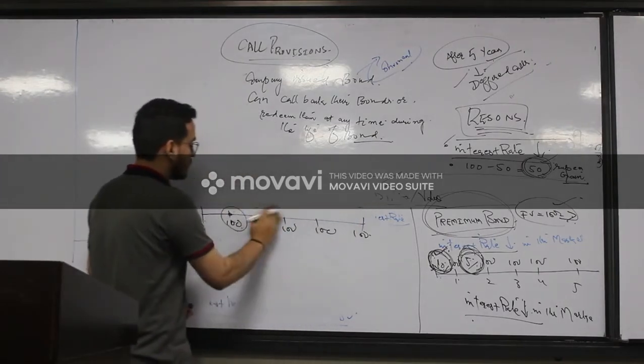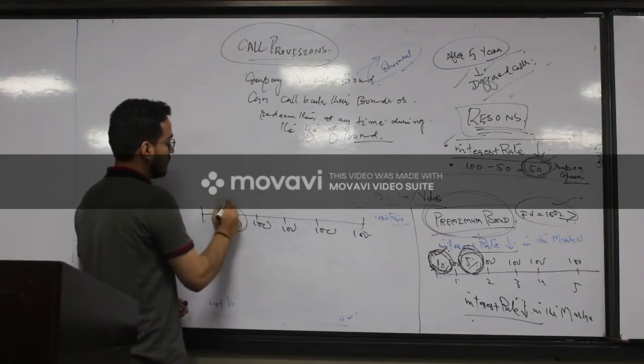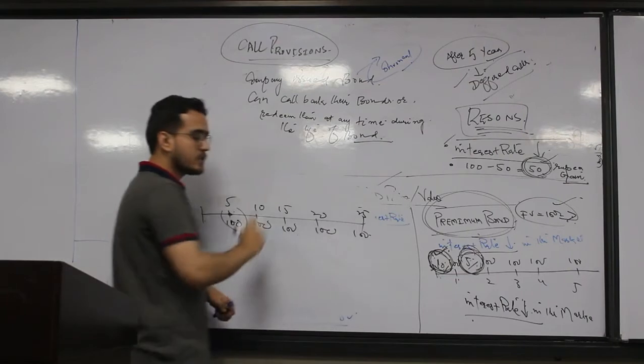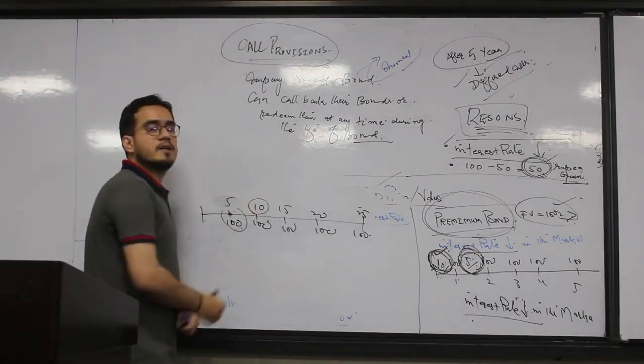So let's make it very simple now. It's a twenty-five year bond. And the company is calling that bond, let's suppose after ten years.